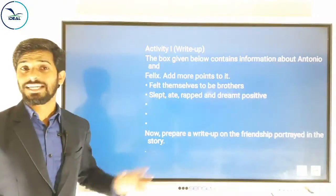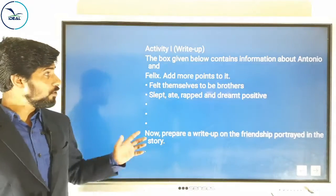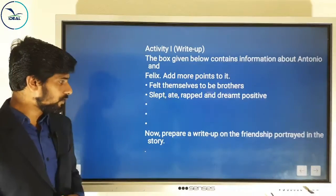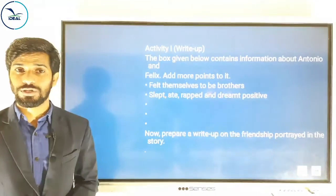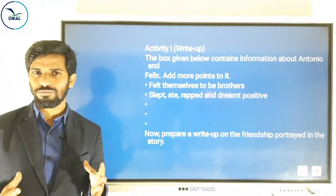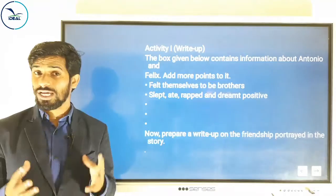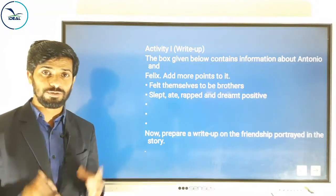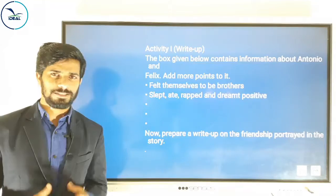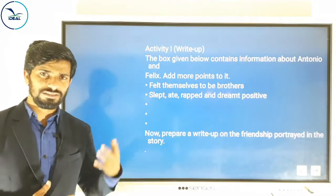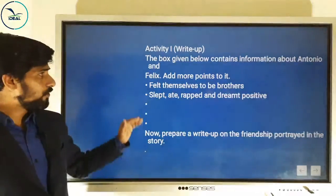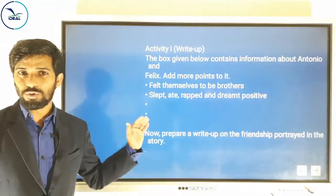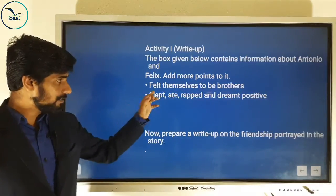This one comes from the second chapter, 'Amigo Brothers.' In 'Amigo Brothers' you can see a question like this: the boxes given below contain condensed information about Antonio and Felix — add more points to it. You all know about Felix and Antonio, the young Puerto Rican fighters who had been friends since their childhood. Both of them worked hard to achieve their goal of winning the lightweight championship of the world. It happened that both of them had to face each other. You all know the whole story.